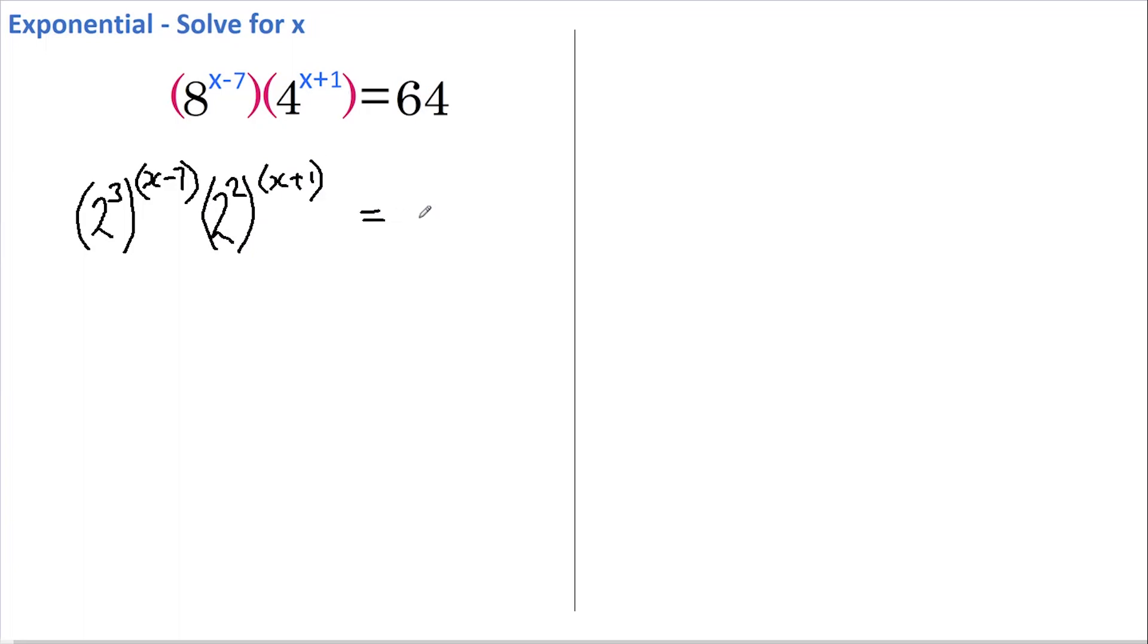And that equals 64, which is 2 to the power of 6. Now, if we utilize the rule that says that if we've got a number raised to a power and that's all raised to another power, then we can rewrite that as that number raised to those powers multiplied together.